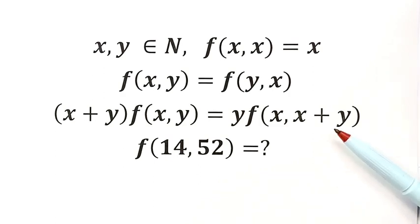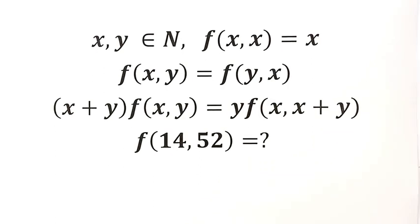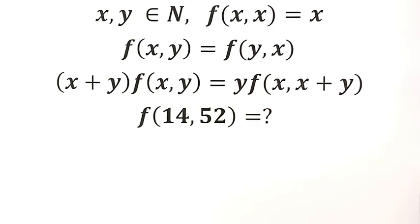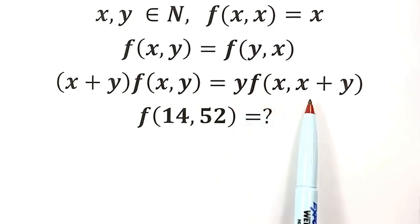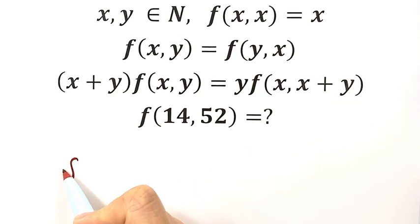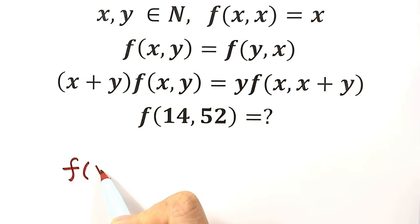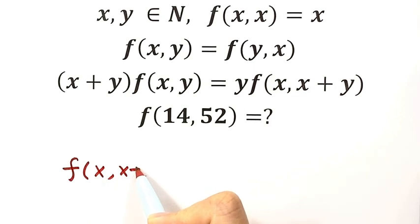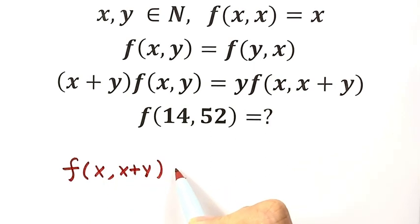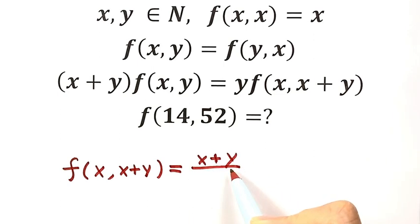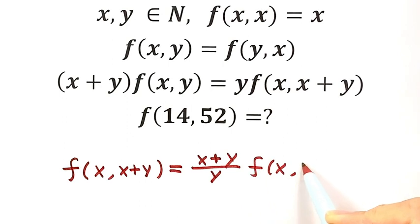We're going to start from the third identity. We're going to rewrite the third identity by dividing both sides by y. Then we have the following: f(x, x+y) equals (x+y)/y times f(x, y). We're going to label this identity as Identity 4.